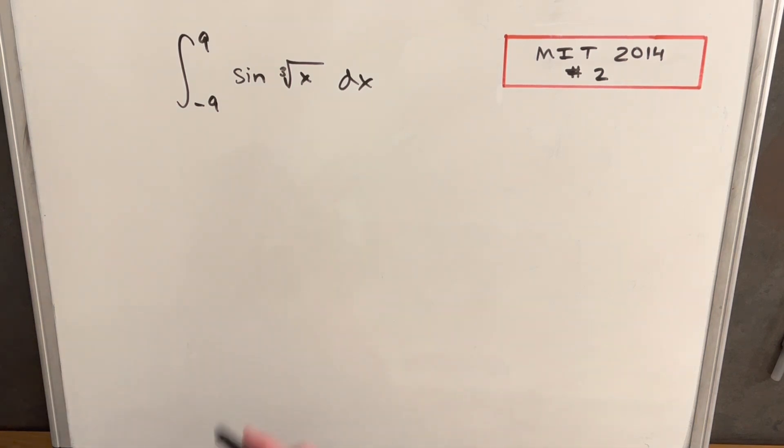What I want to do is use the fact that this function right here is an odd function and we have a special property. Let's just look at that.